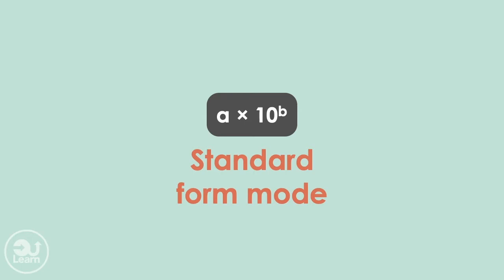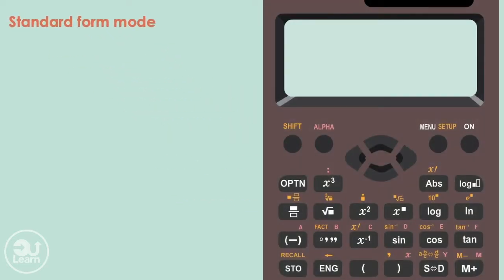Moving on to our next calculator trick, we now have the standard form option. We can easily add and subtract, multiply, divide and convert standard form numbers using this option. We can change the settings on the calculator to give numbers as standard form. We do this by pressing shift and menu.